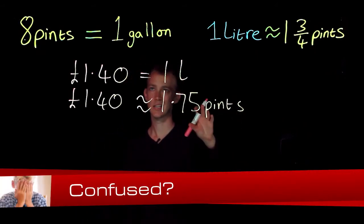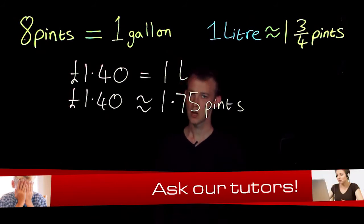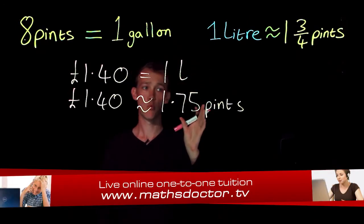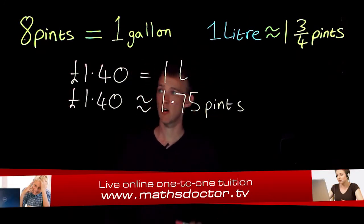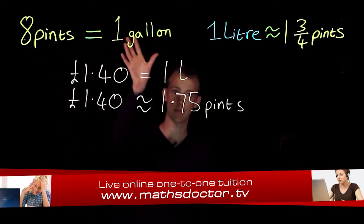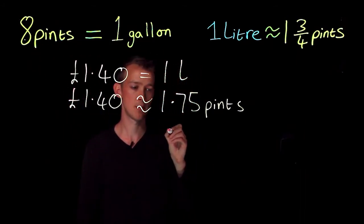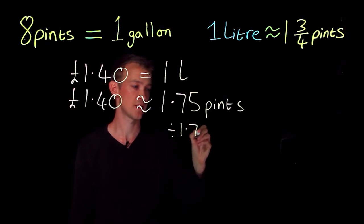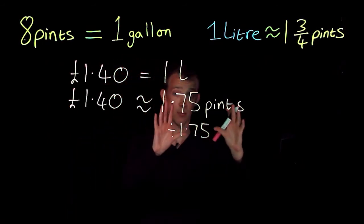Okay, I need to change this into gallons. So what I'm going to do is I'm going to find what one pint is worth so that I can find eight pints, which is the same as a gallon. So I am going to divide both sides here by 1.75.